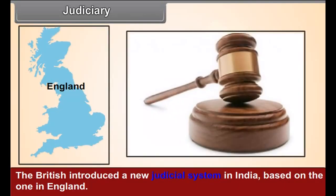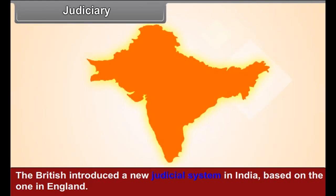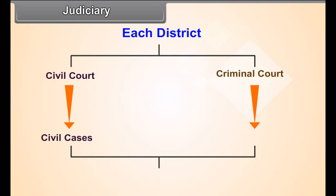The British introduced a new judicial system in India based on the one in England. Each district had a civil court for conducting civil cases and a criminal court for trying criminal cases. High courts were established to review the judgments delivered by these district courts.